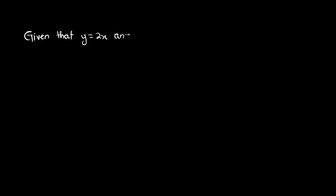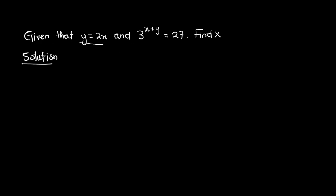Now let's proceed to look at other examples. Here is another example: given that y is equal to 2x, and 3 raised to the power x plus y is equal to 27, we have to find x. Now let's look at the solution to this problem. This problem is actually very easy and straightforward.